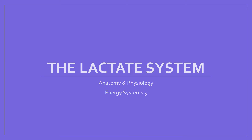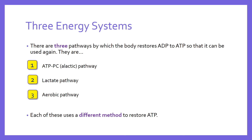This video is about the lactate system, the third of our videos on energy systems. From previous videos, we've talked about how the body has three different pathways by which it resynthesizes ATP. ATP is the currency that has to be used in the muscle cells to provide energy for muscular contraction — muscles won't contract unless we can break down ATP. But ATP doesn't last very long, so we have to have different ways of resynthesizing and topping back up the stores of ATP in the muscle.